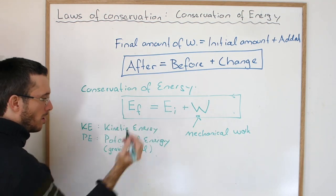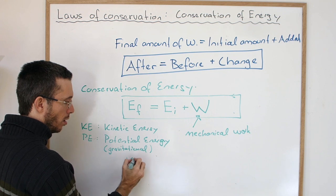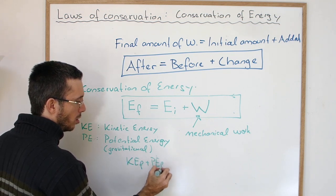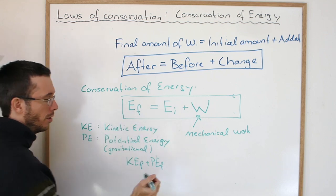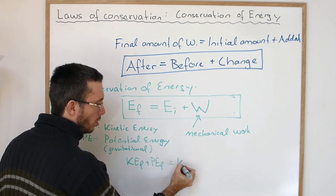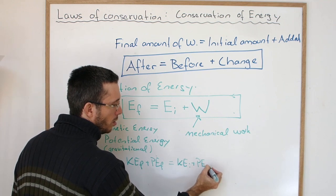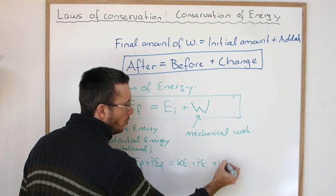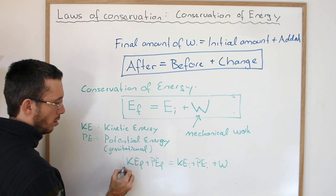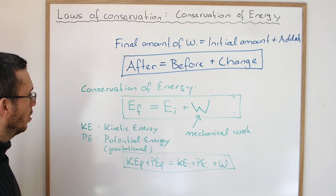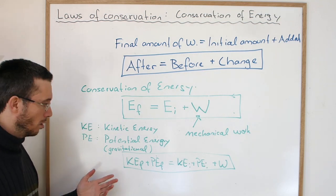Then this equation translates to your final kinetic energy plus your final potential energy. So your total final energy is your kinetic energy initial plus your potential energy initial plus the change which came through work. This is the basic formula that you can use for all your simple mechanical conservation of energy laws.